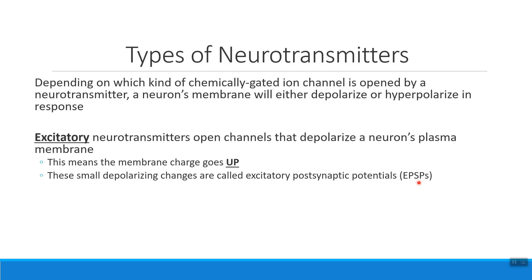An EPSP is an abbreviation for an excitatory postsynaptic potential. Excitatory means the charge went up; postsynaptic tells me what neuron I'm talking about. Remember that the postsynaptic neuron is the neuron that we find after the synapse — this is the neuron that receives the message. That message is excitatory and it makes its membrane charge go up. That's an EPSP, a change in charge caused by an excitatory neurotransmitter.